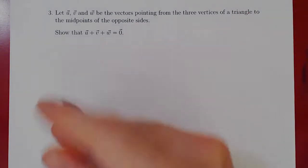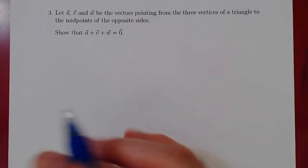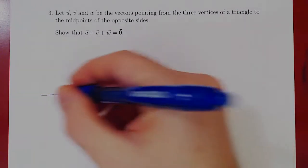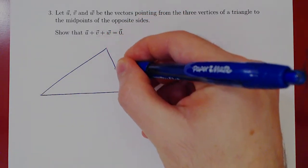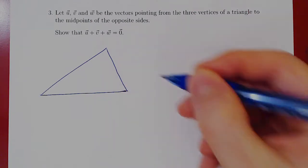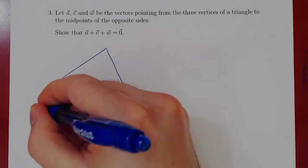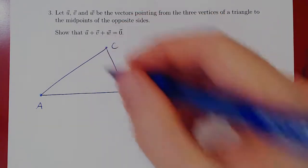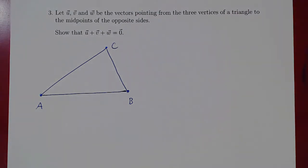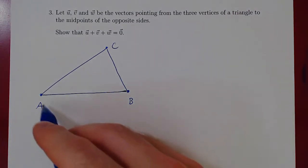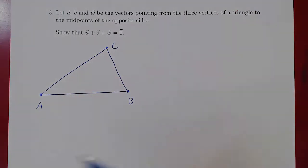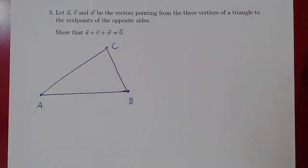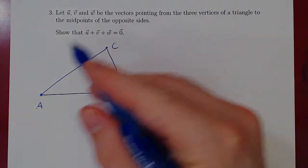We have this triangle — you can draw any triangle, it doesn't matter. Let's label our vertices. This is vertex A, vertex B, vertex C. Whenever you have a geometric figure and you label the vertices, always label them counter-clockwise. For some problems it won't matter, but for others it will be very important. If you label the vertices clockwise, the problem will no longer make sense. So always go counter-clockwise.